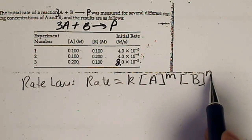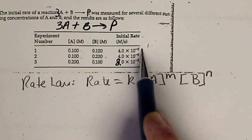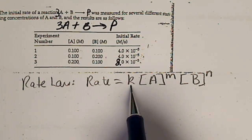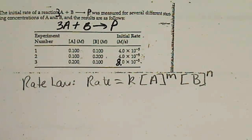So we're going to look for the powers M and N. Once we find the exponents, then we're going to pick one reaction, or one experiment, and solve it for K. And since these numbers are easy, we can probably do this one in our head.